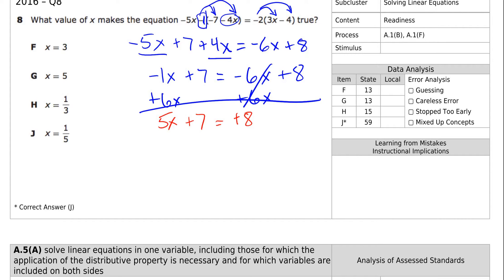We want the x on its own. We get rid of the 7 by going minus 7, minus 7. 5x is equal to 1. Divide by the coefficient. x is equal to 1 fifth. The answer is J.